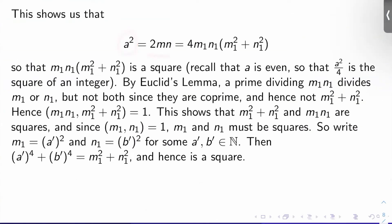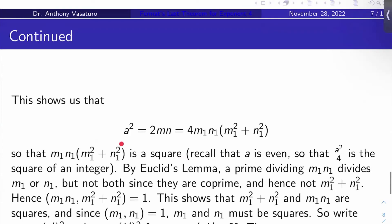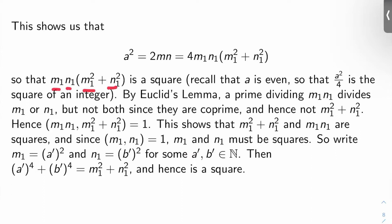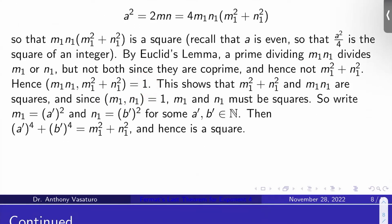Now a² = 2mn, and substituting the new formulas for m and n gives a² = 4m1n1(m1² + n1²). That means m1n1(m1² + n1²) is a perfect square, since a is even so a²/4 is the square of an integer. By Euclid's Lemma, a prime dividing m1n1 also divides m1 or n1, but not both (since they're co-prime), and so it can't divide m1² + n1² either. Therefore m1n1 and m1² + n1² are co-prime — their product is a square and they're co-prime, so each must individually be a square. Since m1 and n1 are also co-prime and their product is a square, m1 and n1 must each be squares as well, by the fundamental theorem of arithmetic.